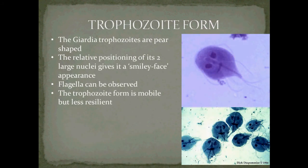The trophozoid form: Giardia trophozoids are pear-shaped. The positioning of their two large nuclei gives them a smiley face appearance. Flagella can also be observed. As mentioned earlier, the trophozoid form is mobile but less resilient.